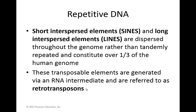There are some other types that we can find, and we call them SINEs and LINEs — short interspersed elements and long interspersed elements. These are going to be dispersed randomly throughout the genome, rather than the tandemly repeated regions that we might find at the centromeres or the telomeres. They are randomly throughout the genome, and they consist of much of our genome — over one-third of the human genome consists of these regions.